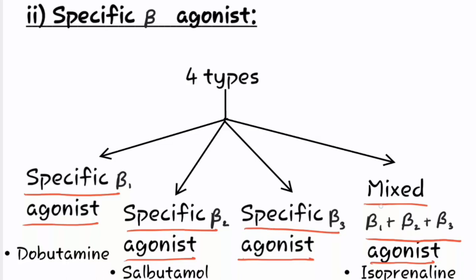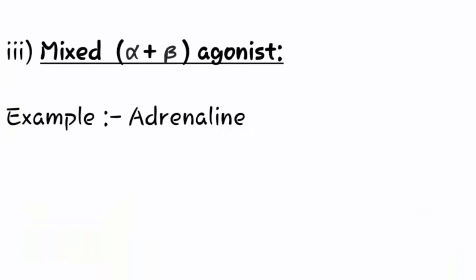The example of mixed beta-1, beta-2, and beta-3 agonist is isoprenaline. The third category under directly acting drugs is mixed alpha and beta agonist, and the example of mixed alpha and beta agonist is adrenaline.